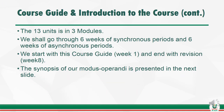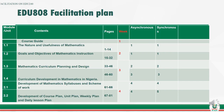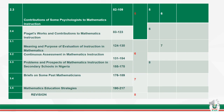The 13 units are in three modules. We shall go through six weeks of synchronous periods and six weeks of asynchronous periods running concurrently. We start with the course guide in the first week and end with revision in the eighth week. In the fourth week we will consider development of course plans, unit plans, weekly plans, and daily lesson plans. In the fifth week we will consider the contributions of some psychologists to mathematics instruction.